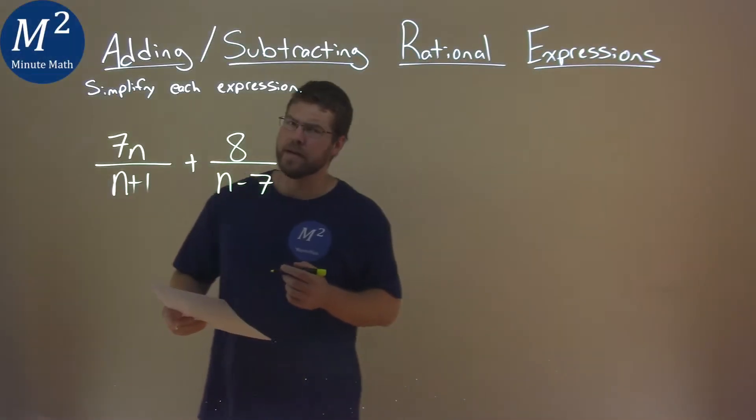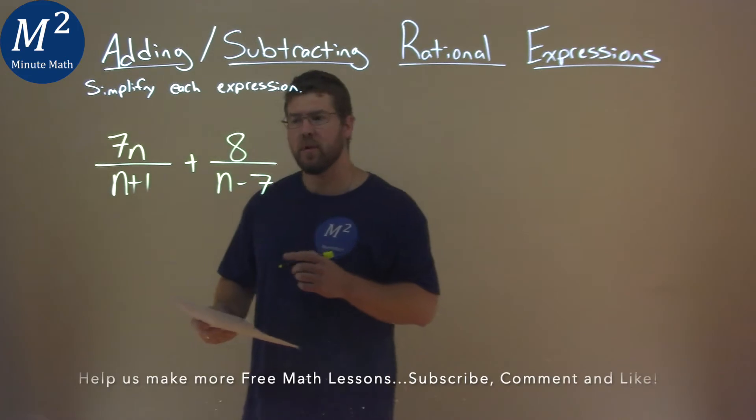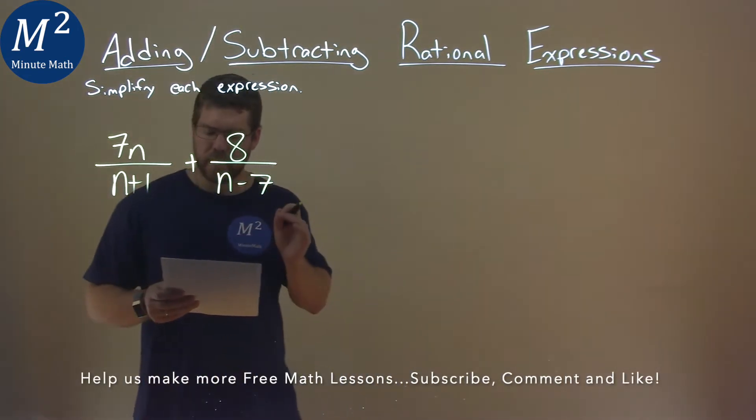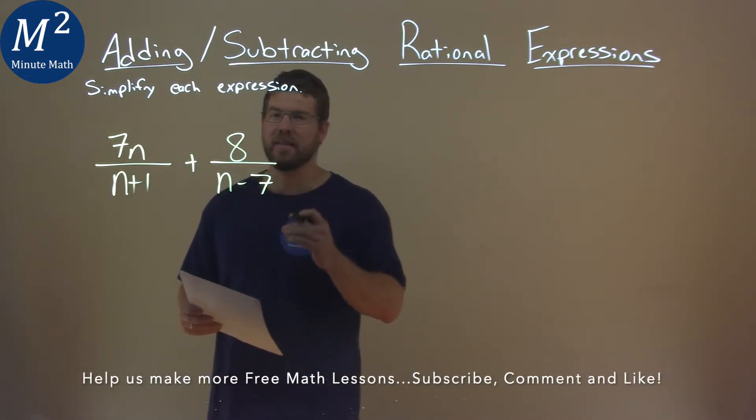We're given this problem right here: 7n over n plus 1 plus 8 over n minus 7, and we have to simplify this expression.